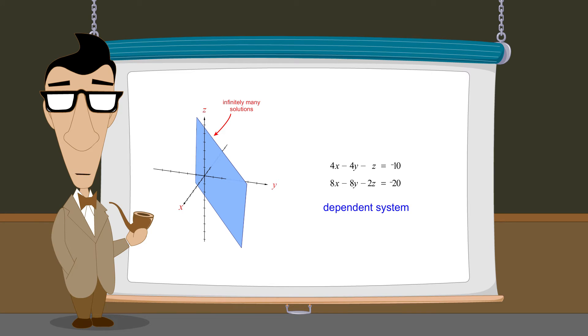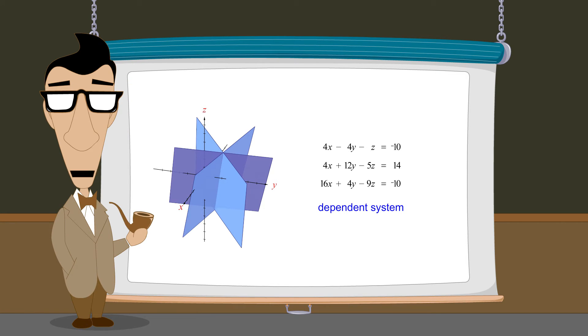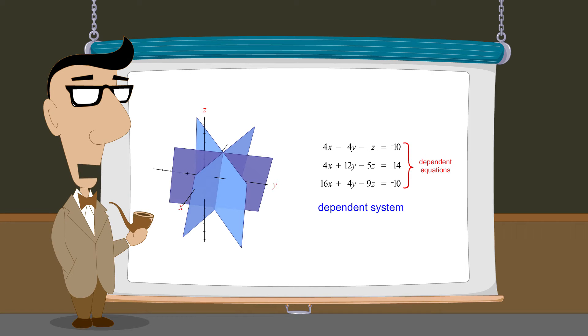However, in systems of more than two equations there are ways that the equations can be dependent without being multiples of each other. Take for example this dependent system of three linear equations in three variables. No equations in this system are multiples of each other, yet they are all still dependent. So what property makes equations dependent if they're not multiples of each other? Mathematically speaking, in a group of equations a dependent equation is a linear combination of one or more other equations in the group.